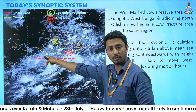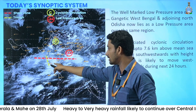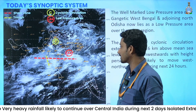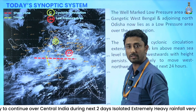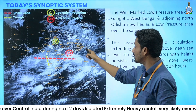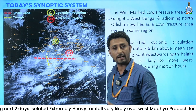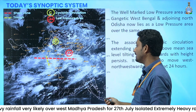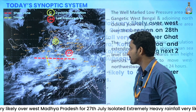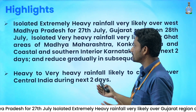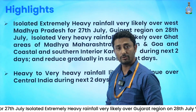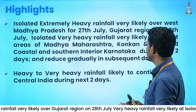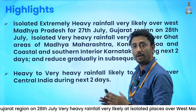The offshore trough starts from the South Gujarat coast and runs along the northern portion of the state of Karnataka. There is also a cyclonic circulation over the northwestern part of Uttar Pradesh, extending up to 1.5 kilometers above mean sea level.